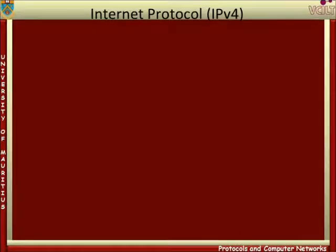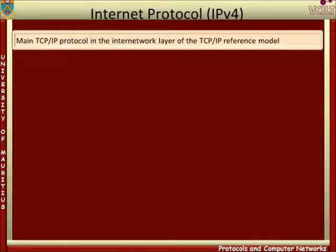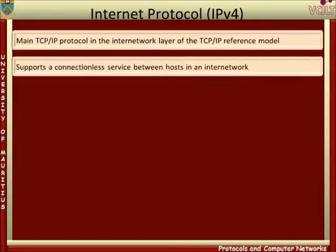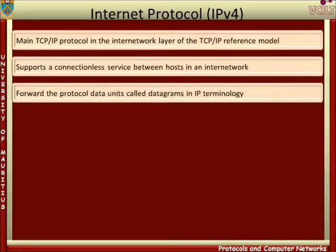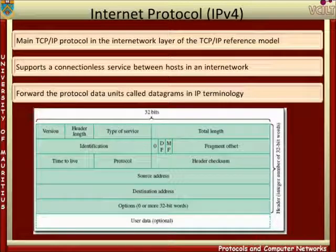IP version 4 is the main TCP/IP protocol in the internetwork layer of the TCP/IP reference model. It supports a connectionless service between hosts in an internetwork, and its principal function is to forward the protocol data units called datagrams in IP terminology. This is achieved by each datagram carrying a unique address of its destination. The figure shows the format of an IP version 4 datagram.